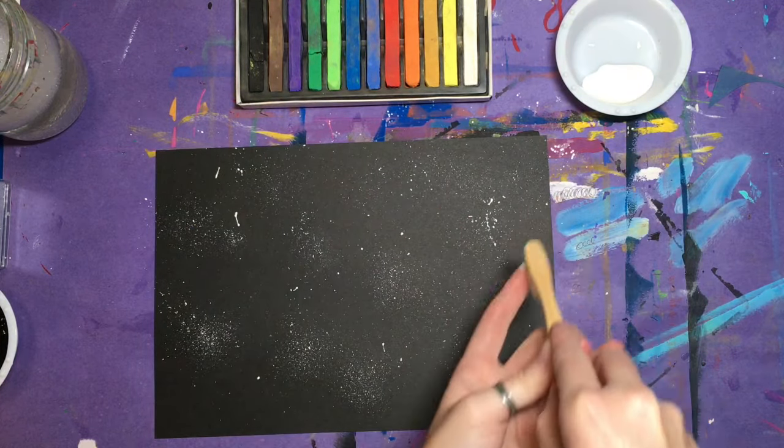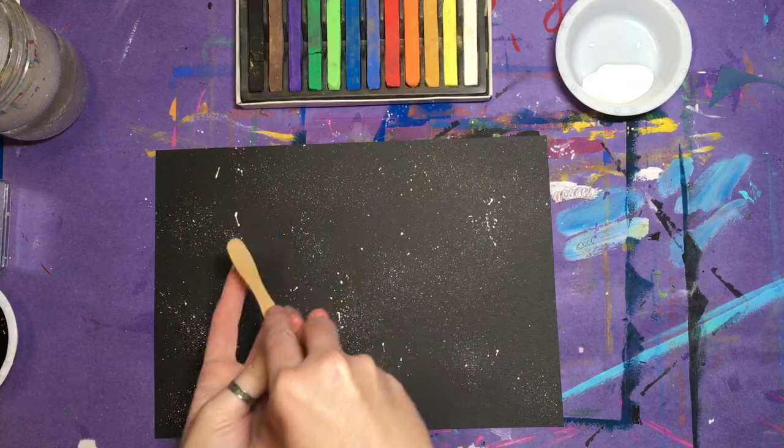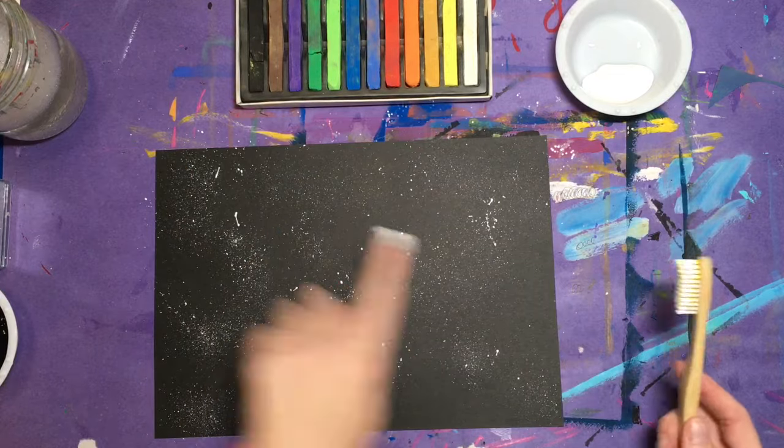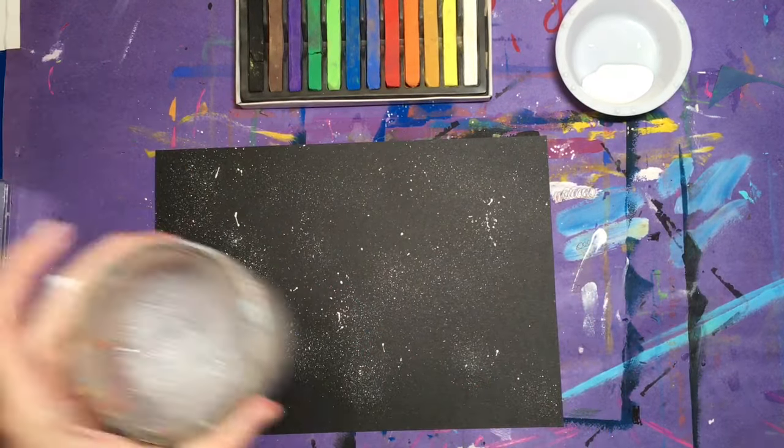When you're all done creating the nighttime sky, wipe your finger off on your messy mat, put the paintbrush in the jacuzzi, and let's learn about the northern lights while this part dries.